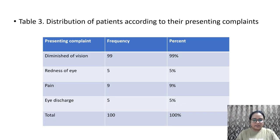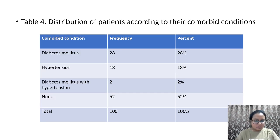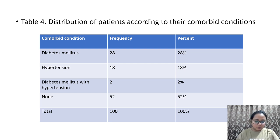In Table 3, the distribution of patients according to presenting complaints showed that the most common presenting complaint was diminished vision at 99%. There were 9 cases with pain and 5 cases each with redness of eye and eye discharge. In Table 4, regarding comorbid conditions, 28% had diabetes, 18% had hypertension, 2% had both diabetes and hypertension, and 52% had no comorbid disease.